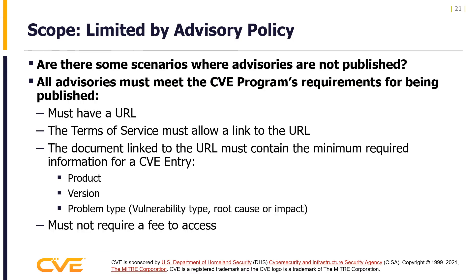All advisories must meet the CVE program's requirements for being published. All advisories must have a URL, the terms of service must allow linking to that URL, and the document linked must contain the minimum required information for a CVE entry. The minimum required information includes: product, version, vulnerability type, root cause or impact, and the URL must not require a fee to access.